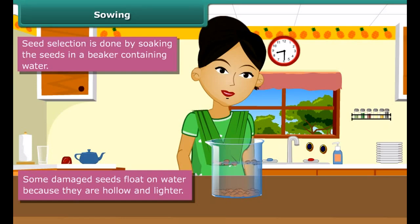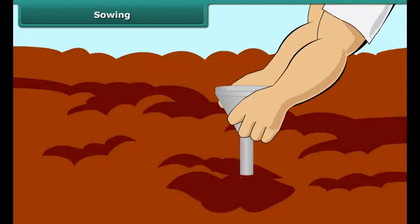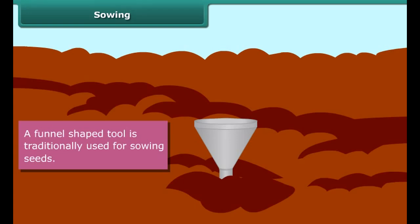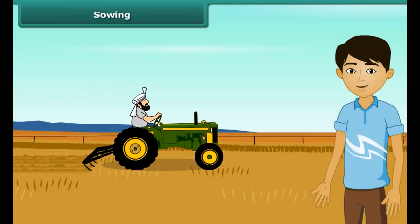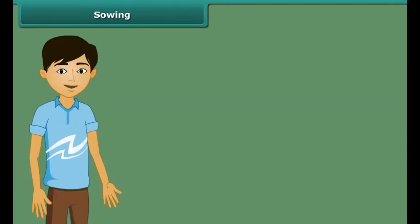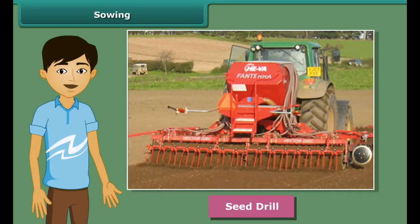Look at this farmer — he has a funnel-shaped tool for sowing seeds. He fills seeds into the funnel and passes them down through the sharp ends of the pipe to get them seeded in the soil. This is a traditional method and very easy. Nowadays, farmers use modern seed drills for sowing with the help of tractors. A seed drill sows seeds uniformly at proper distance and depth, ensuring seeds get covered by soil after sowing, saving a lot of time and labor.